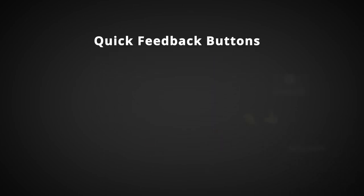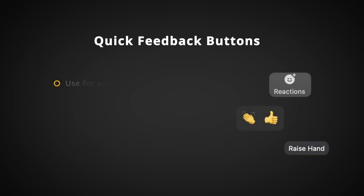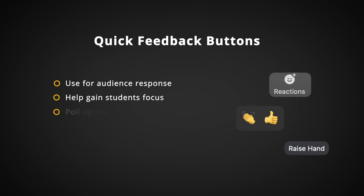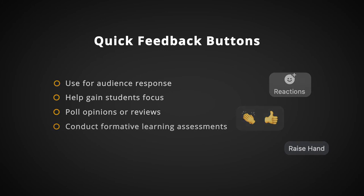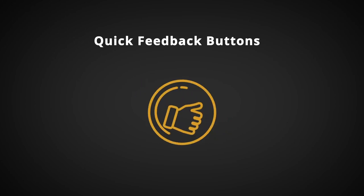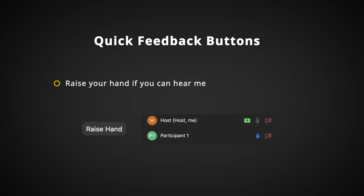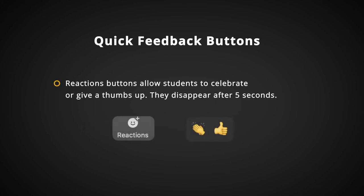Quick feedback buttons are located in the participants tab. These buttons may be used for audience response, particularly in large groups or in a short time frame, to gain students' focus, to poll opinions, to conduct reviews of a prior lesson, and to conduct formative assessments of learning. Quick feedback can promote attention and engagement throughout the remote meeting. For example, raise your hand if you can hear me. The reactions buttons allow students to celebrate or give a thumbs up to what they hear and see, and automatically disappear after five seconds.